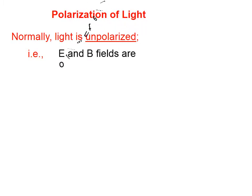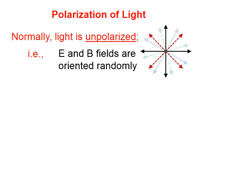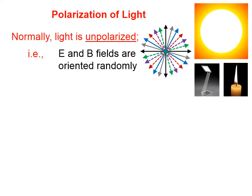Normally, light is unpolarized, and what that means is the electric and magnetic fields are oriented randomly. The reason for light being normally unpolarized is because light is emitted any time a charged particle is oscillating, and in things like the sun, a lamp, a candle, the particles are oscillating randomly.